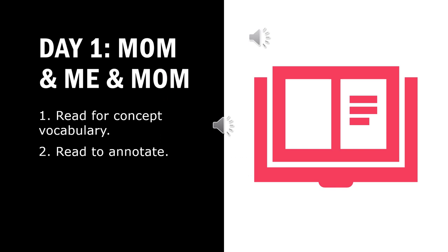We're going to start our week by reading the 'Mom and Me and Mom' text. We're going to read for concept vocabulary and we are going to read for annotation. The word wall for this day is: supervision, charitable, philanthropist, and annotation. You're going to watch a video about these words, their definition, and their part of speech. You're going to have an activity and we are going to annotate throughout the text.